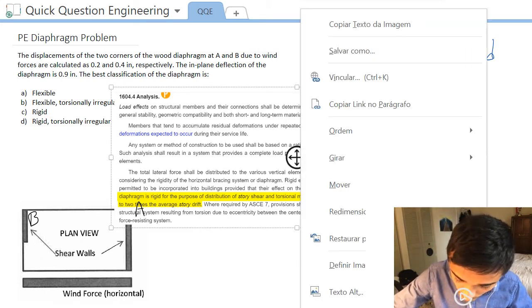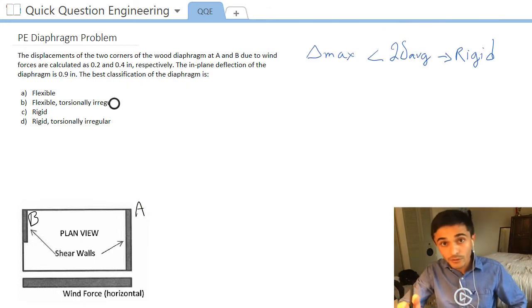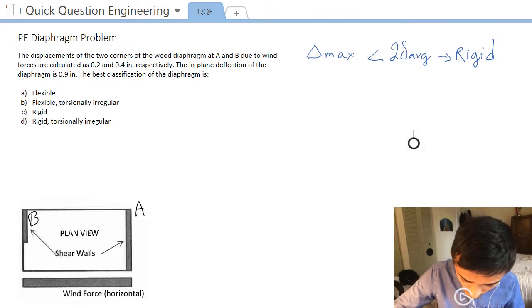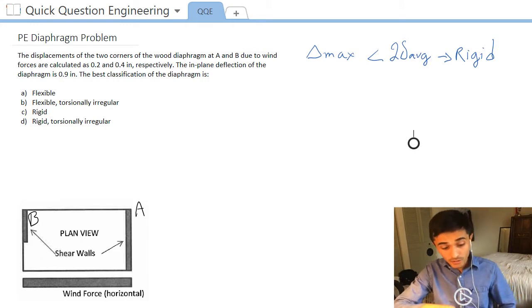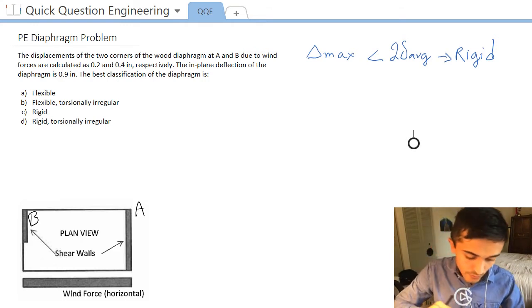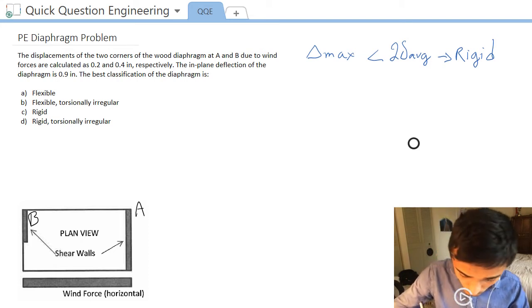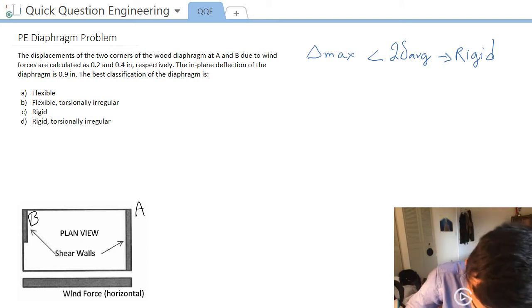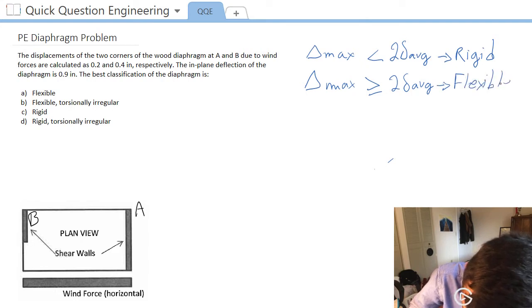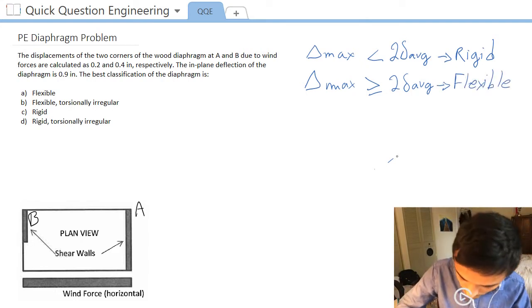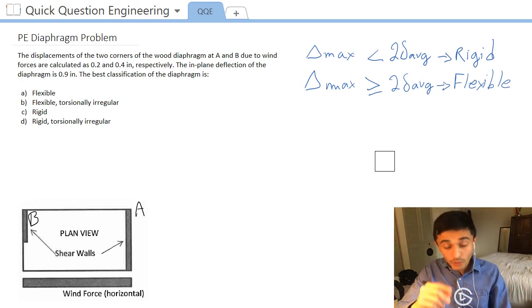We're not going to get into semi-rigid diaphragms in this example, and our problem does not include semi-rigid diaphragms in the classification. So I'm going to write it out here. If my maximum diaphragm deflection is greater than or equal to two times the average story drift, it is flexible. Alright? So let's find those parameters for our problem.